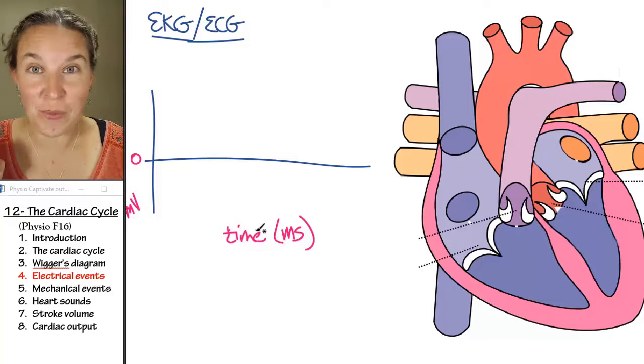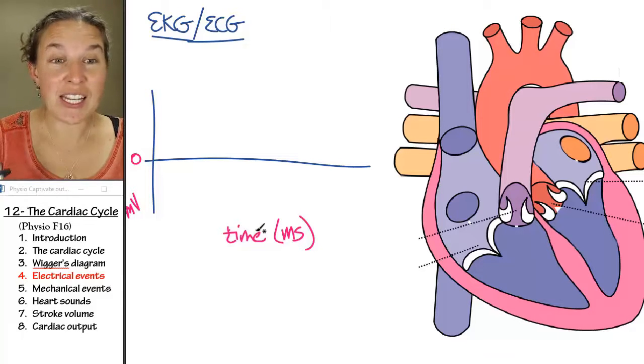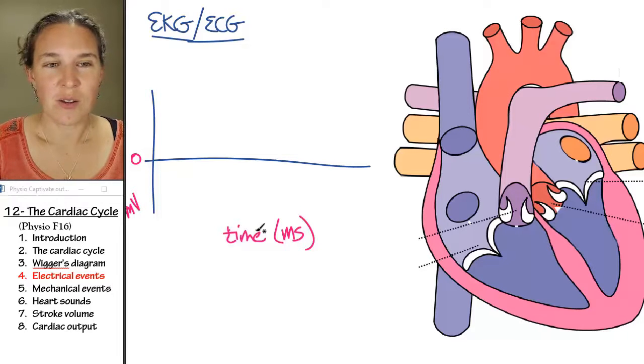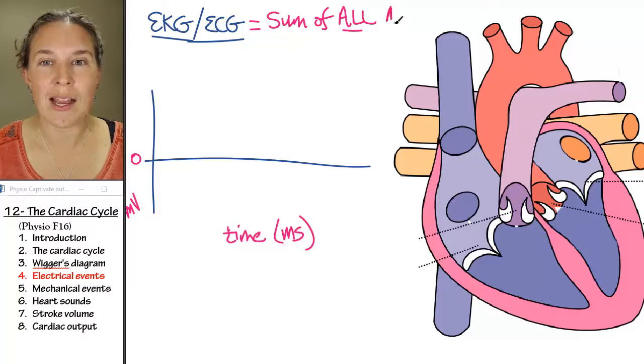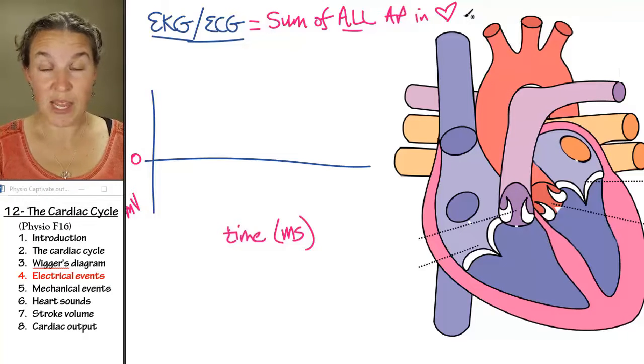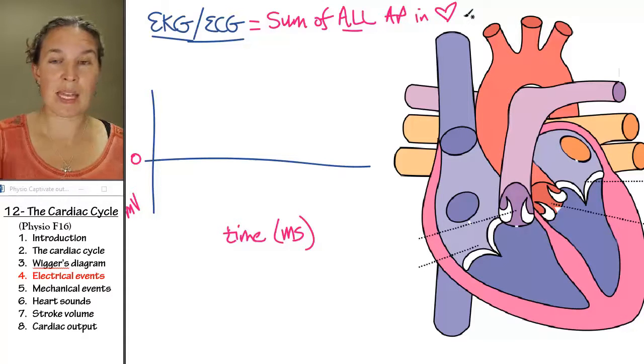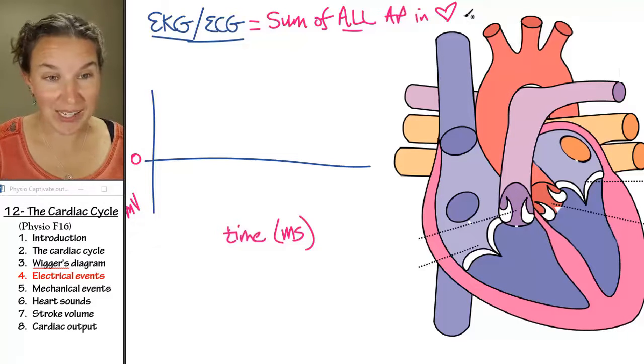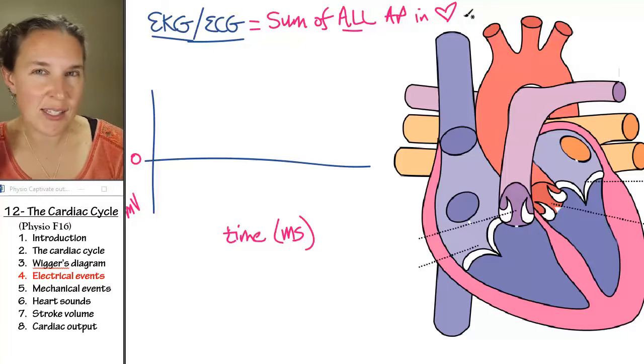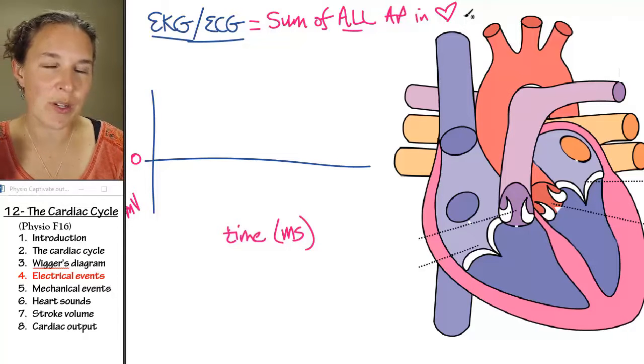Now, am I drawing action potentials? Is an EKG just a picture of a bunch of action potentials? Well, sort of, but take a deep breath and write this down. The EKG is the sum of all action potentials in the heart. And if you hold really still and you don't get any other crazy input into the reading, you're going to get just the electrical activity in the heart that's being recorded in an EKG.